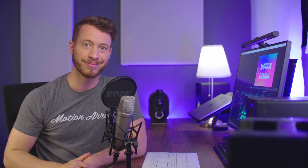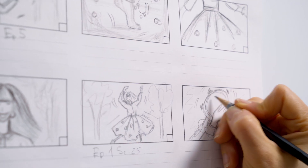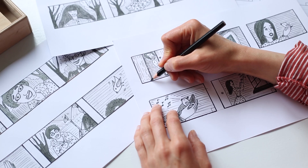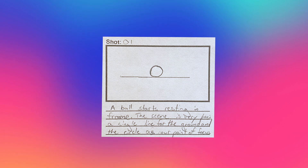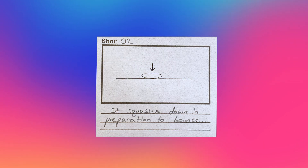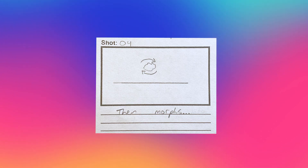Today we're going to be going over the process of storyboarding for motion design — drawing out our concept by breaking it down into individual shots, building out the composition, thinking through the shapes, movements, transitions, etc. And because every single project is different, we're going to be going through one together as an example to learn from. So let's dive right into it.